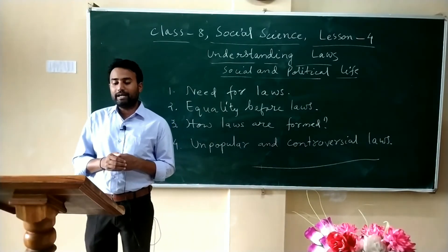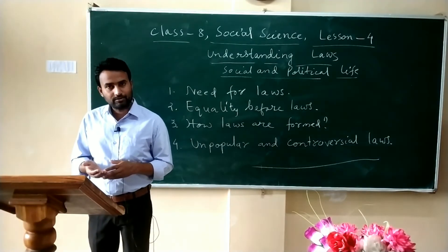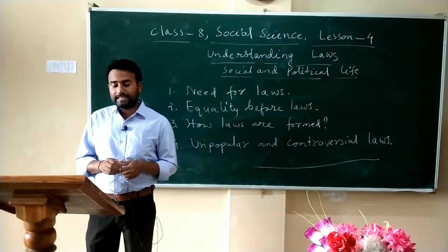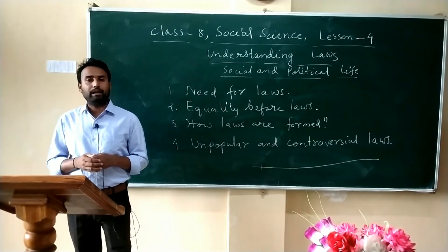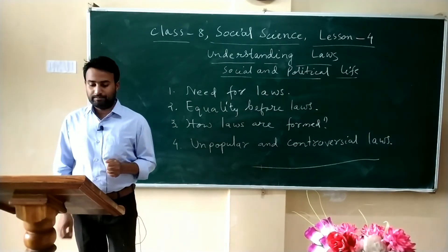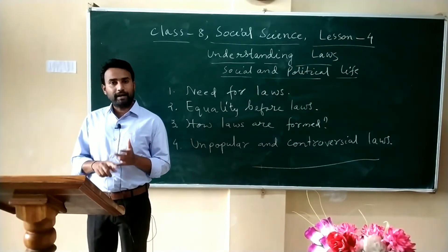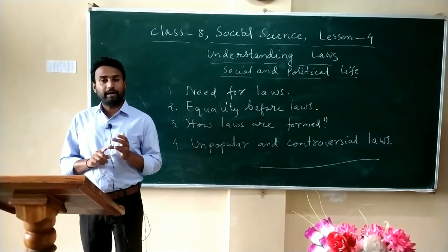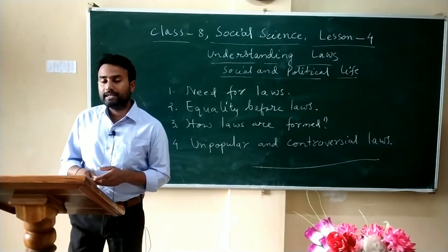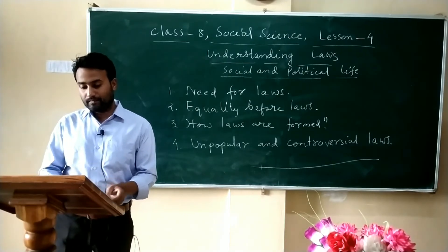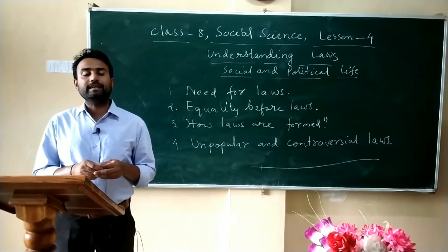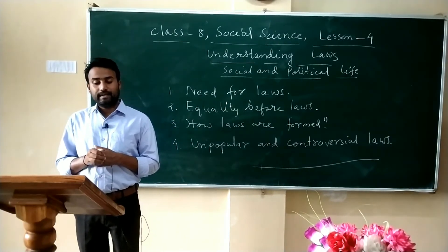Most laws originate in Lok Sabha through three readings before being voted on. After a bill has been passed by the originating house, it is sent to Rajya Sabha, where it is debated and voted on. Rajya Sabha can accept, reject, or amend a bill. The process of formulating a law has four steps: first, a bill is introduced in Parliament; second, the bill is passed by Parliament; third, it is sent to the President for approval; and fourth, when the bill is adopted it becomes an act.